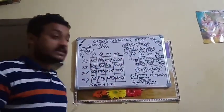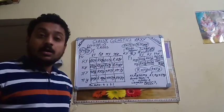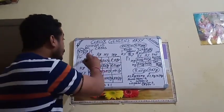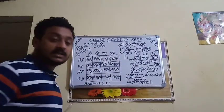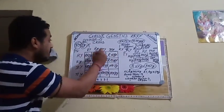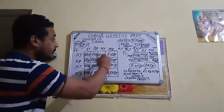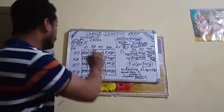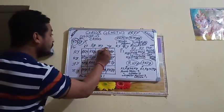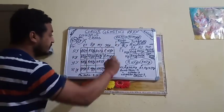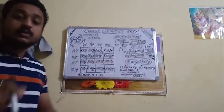We made a bigger Punnett square. Since there are four gametes from each parent, we need 4 times 4 equals 16 boxes. We wrote four gametes across the top and four along the side, giving 16 combinations. Then we did simple multiplication, just as we did in F1 generation.